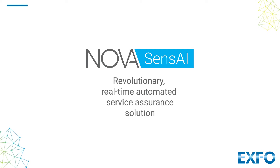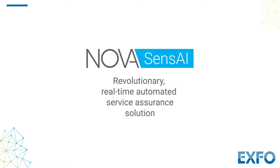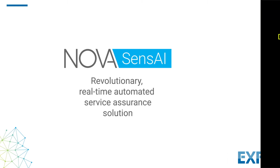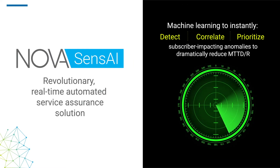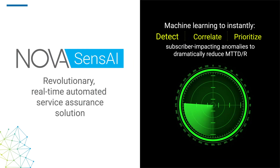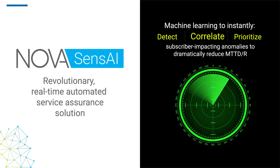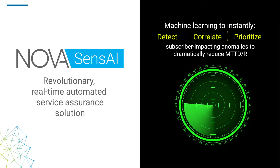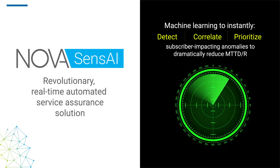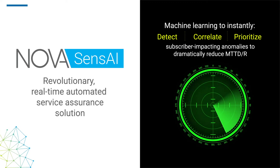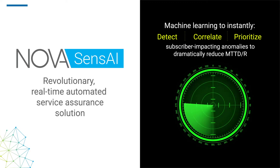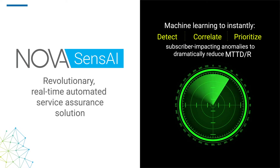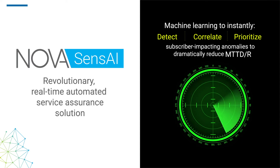NovaSense AI is the revolutionary real-time automated service assurance solution that uses machine learning to instantly detect, correlate, and prioritize subscriber-impacting network and service anomalies to dramatically reduce mean time to detect and repair.